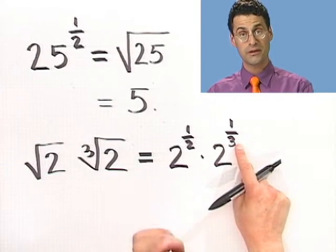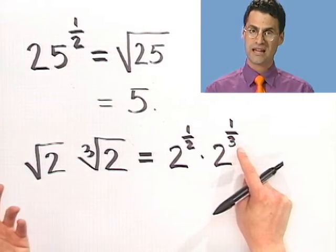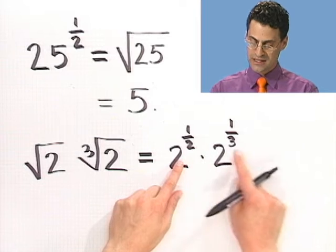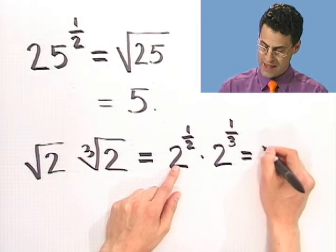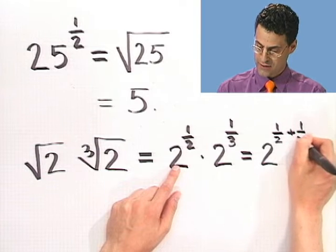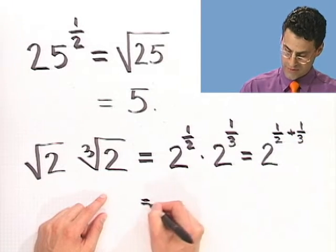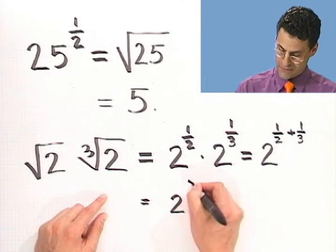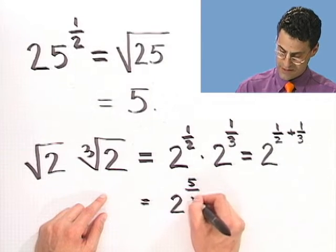I have the same base, so what do I do with the exponents? You have to remember the principle, and if you don't remember the principle, just write down a simple example. And what you would see is, you add the exponents. So I have to take 1 half and add it to 1 third. And what does that equal?